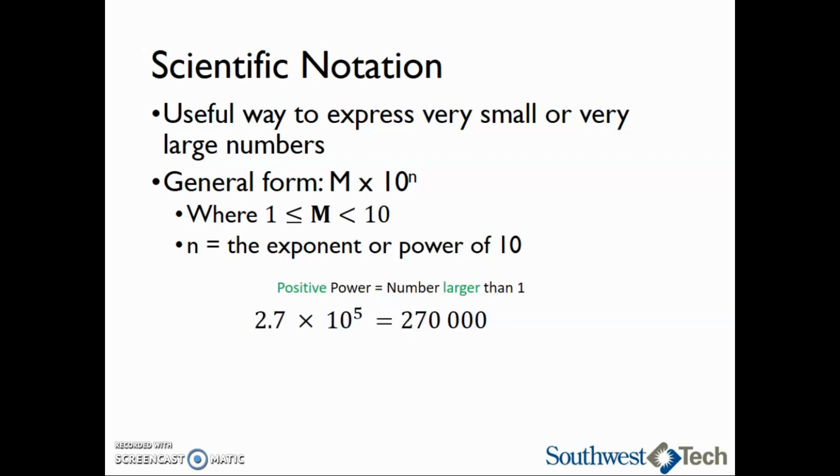As an example, if we have a positive power, it means that our number is larger than 1. So 2.7 × 10^5 is going to be a number that's larger than 1. With a positive exponent, we move the decimal point that many places to the right. So when we move our decimal point five places to the right, we end up with 270,000.